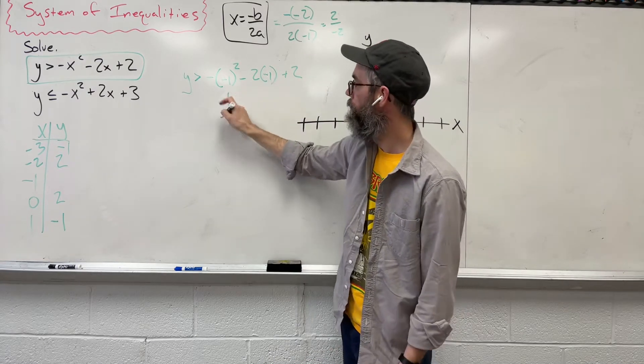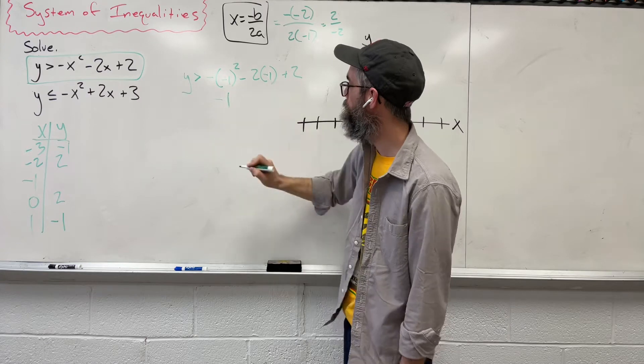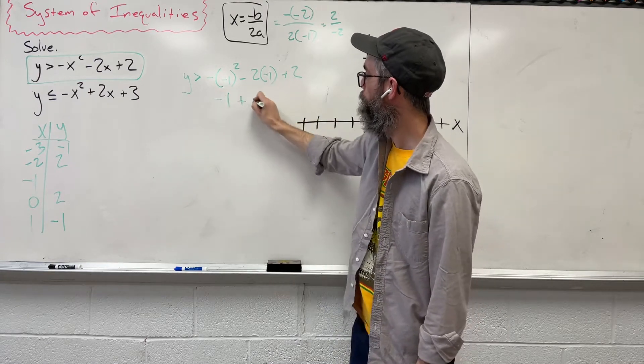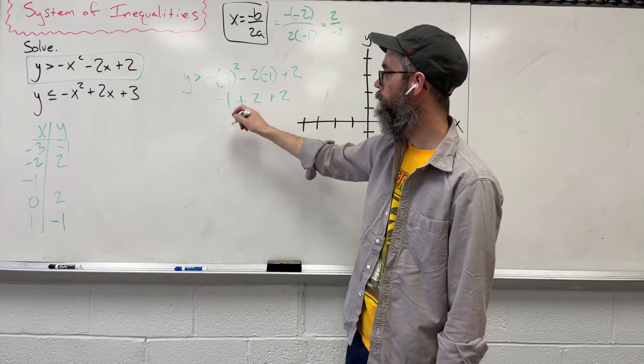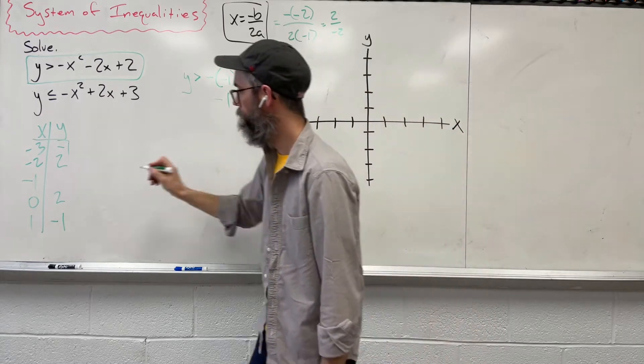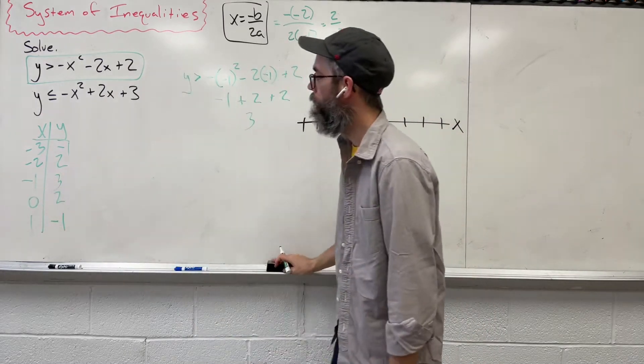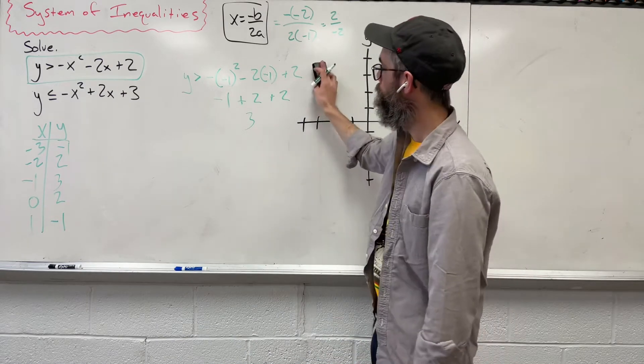One last time. Negative 1 squared is positive 1, but we got this negative out here. Bring it down, negative times negative is positive. Bring down the 2. 2, 4 minus 1 gives us 3. And there you go. So we now have our t-chart. We'll come back to that.